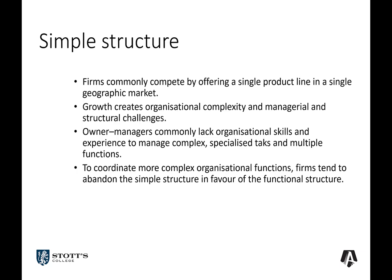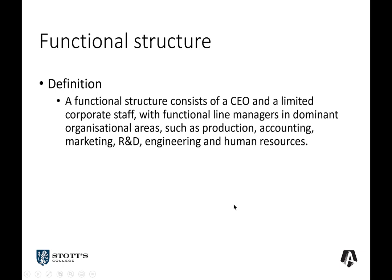The first stage in a more complex organizational form is the functional structure, and there is an additional extension video describing it as part of this lecture. A functional structure has a CEO and a limited number of corporate staff overseeing particular organizational areas — production, accounting, marketing, etc. — each requiring specialist knowledge and experience. The risk in a functional structure is that you end up with a series of silos. The CEO or small top management team still makes the overall strategic decisions, while production, accounting, and marketing managers make functional decisions.